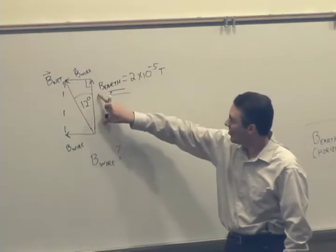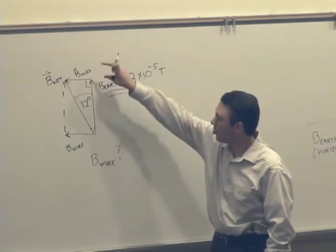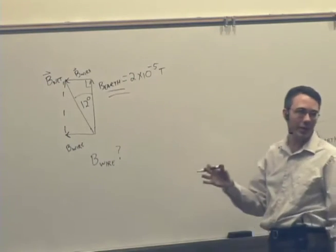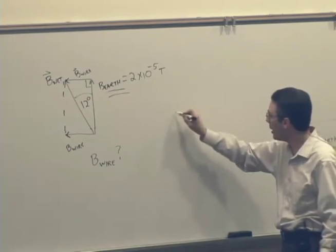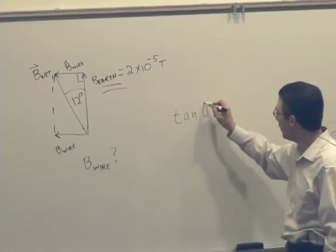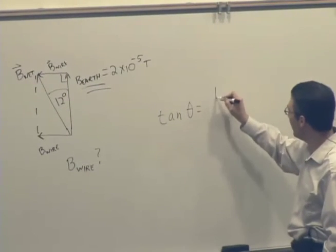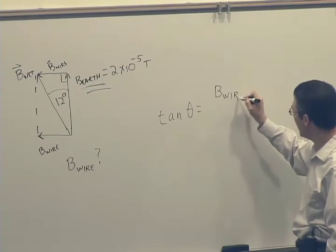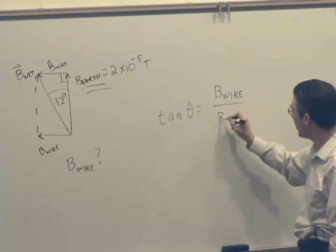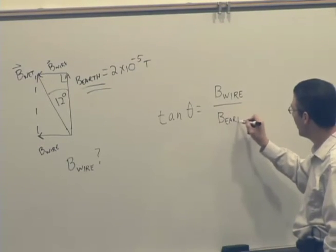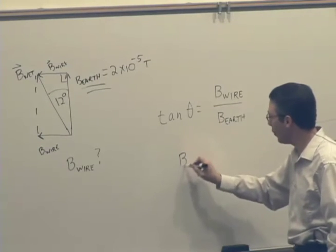Well, I know the adjacent side. I'm looking for the opposite side. What trig function do I want? Tangent, right? Tangent of theta is going to give me the opposite, B of the wire over the adjacent, B of the Earth. And then I can just solve for it.